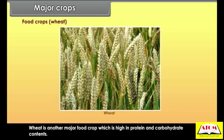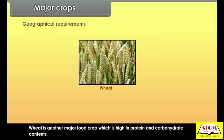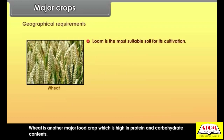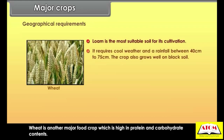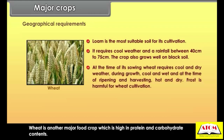Wheat is another major food crop which is high in protein and carbohydrate contents. Geographical requirements: loam is the most suitable soil for its cultivation. It requires cool weather and a rainfall between 40 and 75 centimeters. The crop also grows well on black soil. At the time of sowing, wheat requires cool and dry weather; during growth, cool and wet; and at the time of ripening and harvesting, hot and dry. Frost is harmful for wheat cultivation.